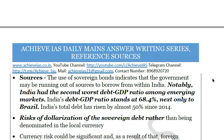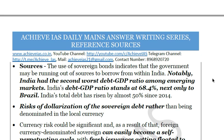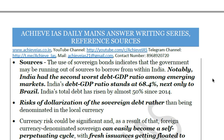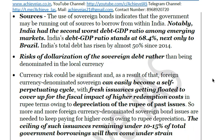India's total debt has risen by almost 50% since 2014. There is also a risk of dollarization of sovereign debt — rather than being denominated in local currency, if there is dollarization, you will have to pay in dollars at loan maturity. This will create demand for dollars from the Indian government and can adversely affect the country's foreign exchange reserves. Foreign currency-denominated sovereign debt can easily become a self-perpetuating cycle — depreciation of the rupee forces the government to arrange more rupees, making repayment costlier.